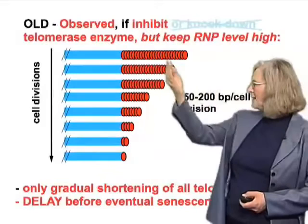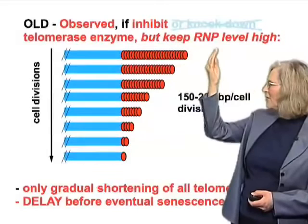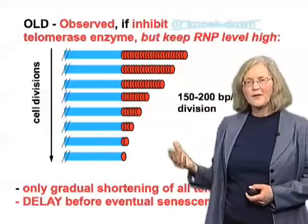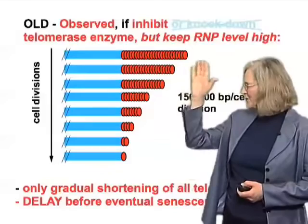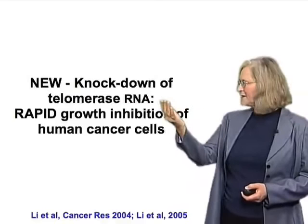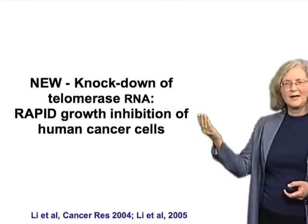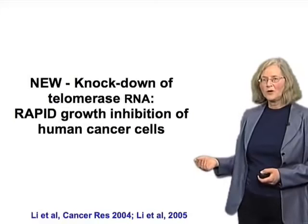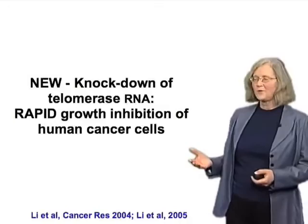An important note: with enzyme inhibition, you're still keeping the telomerase ribonucleoprotein (RNP) level high — you're not depleting the cells of the enzyme, you're simply rendering it inactive. I make that distinction because of the next results. What was observed was quite surprising: if one depleted telomerase by knocking the telomerase RNA level down, then one found there was a very rapid effect on human cancer cells — one didn't see the long delay before the effect was observed.